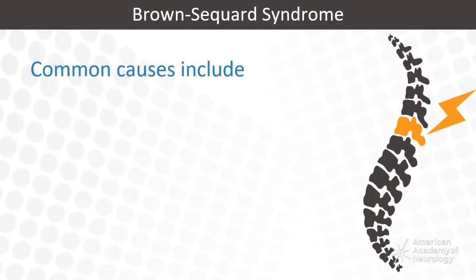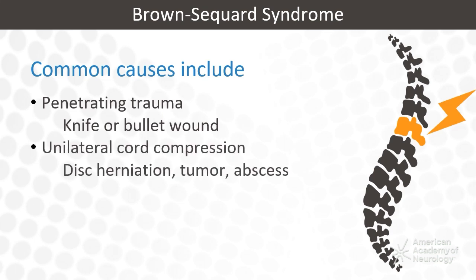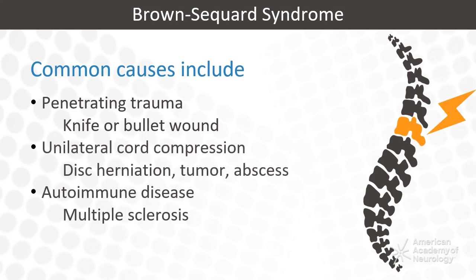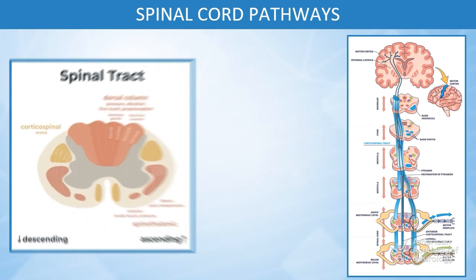Common causes are penetrating trauma from a knife or bullet wound, but other causes may include unilateral cord compression, cord ischemia, or an autoimmune disease such as multiple sclerosis. Damage to several spinal cord pathways and structures account for the clinical symptoms and exam findings. Understanding this anatomy can help localize the site of the injury.